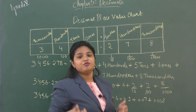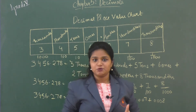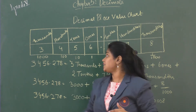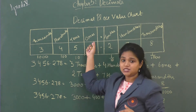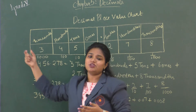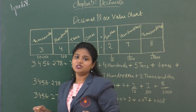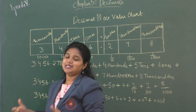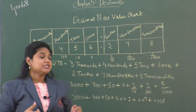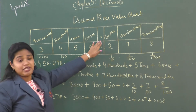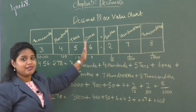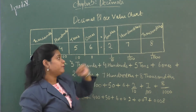We are aware of the place value of the whole number part that starts with ones, tens, hundreds, thousands, and goes on like 10,000, lakhs, 10 lakhs, and so on. In the center we have the decimal point which is separating the whole number part and the decimal part.